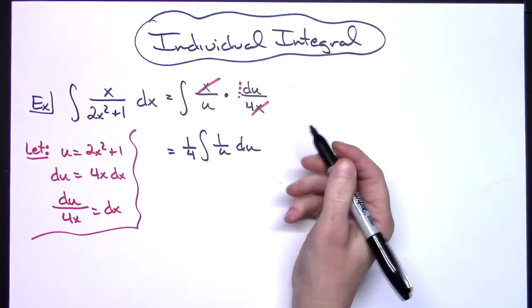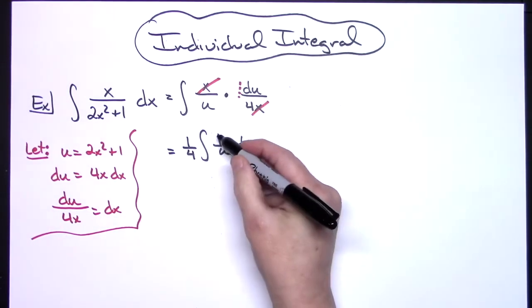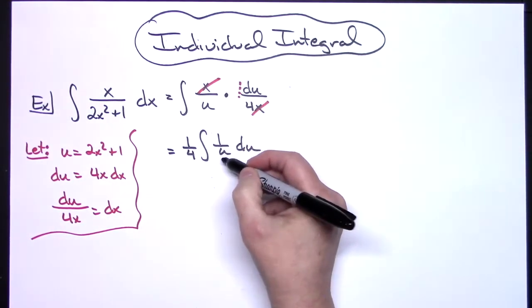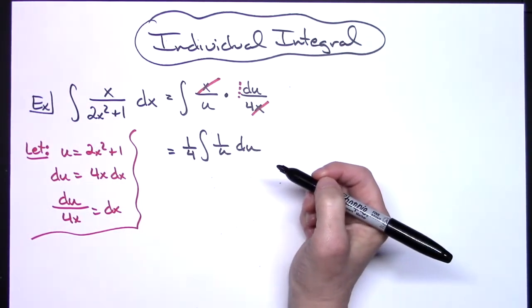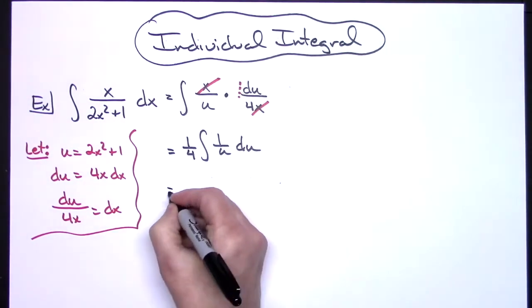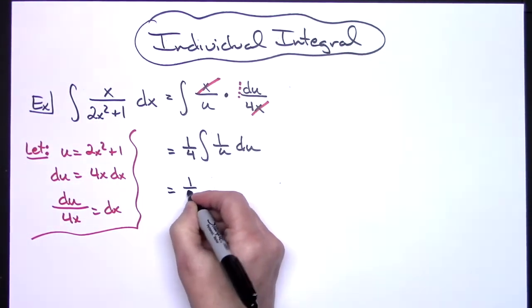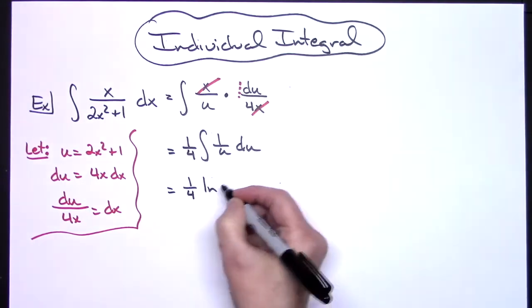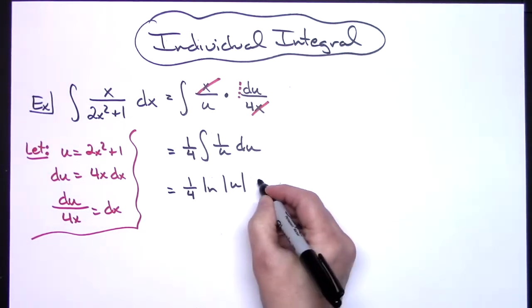Hopefully at this point you have this memorized: integral of 1 over u is going to be that natural log absolute value of u. Definitely something that has to be memorized. So one-fourth natural log absolute value of u plus C.